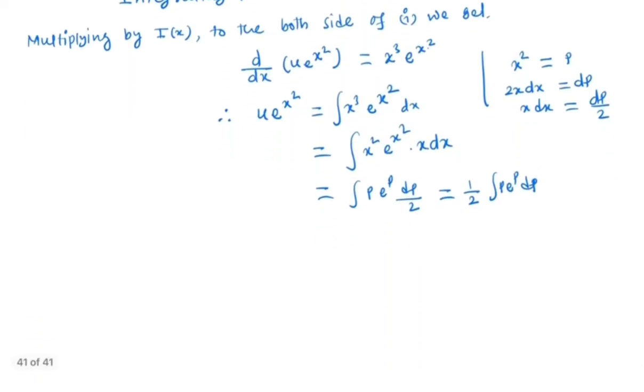By solving this by integration by parts method, we have p e^p minus derivative of p is 1, integral of e^p is e^p dp. This is nothing but 1/2 (p e^p - e^p) + c.